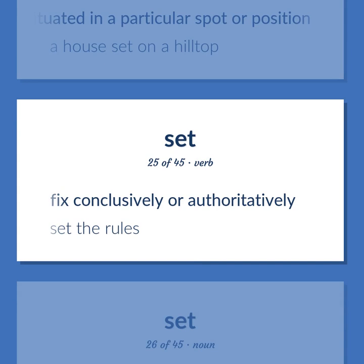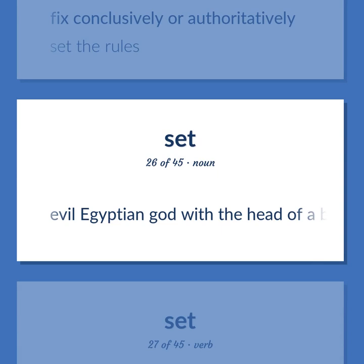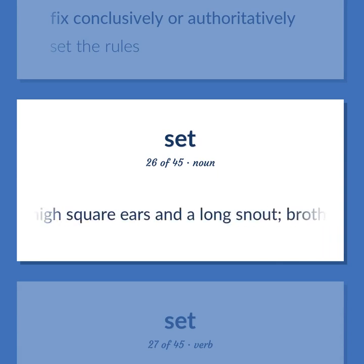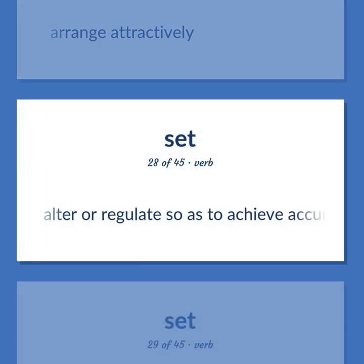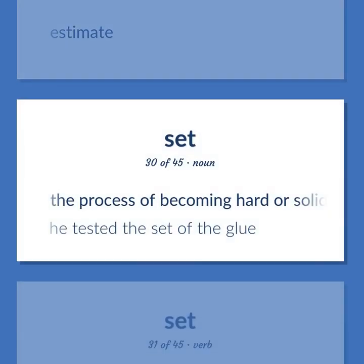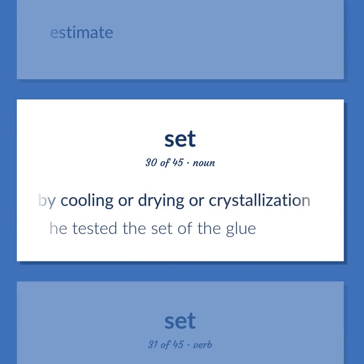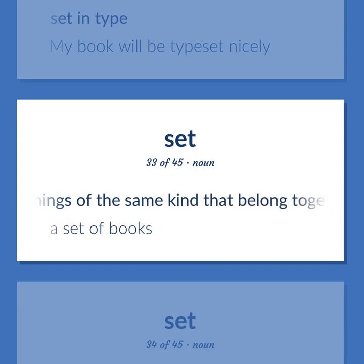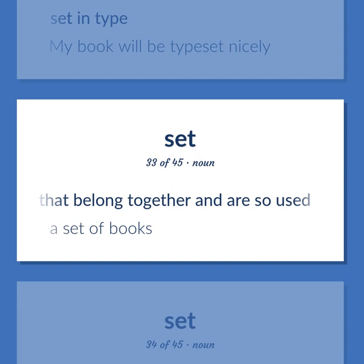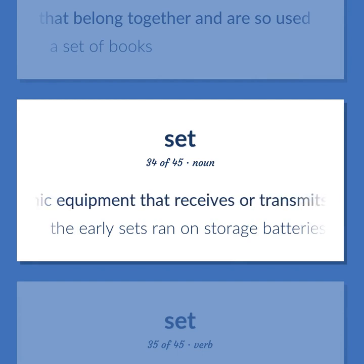Evil Egyptian god with the head of a beast that has high square ears and a long snout; brother and murderer of Osiris. Arrange attractively. Alter or regulate so as to achieve accuracy or conform to a standard. Estimate. The process of becoming hard or solid by cooling or drying or crystallization. Example: He tested the set of the glue. Bear fruit. Set in type. Example: My book will be typeset nicely. A group of things of the same kind that belong together and are so used. Example: A set of books. Any electronic equipment that receives or transmits radio or TV signals. Example: The early sets ran on storage batteries.